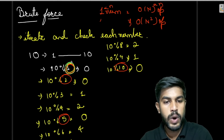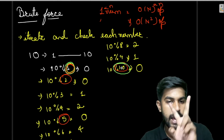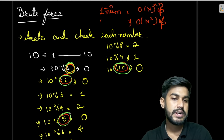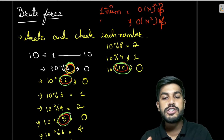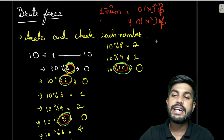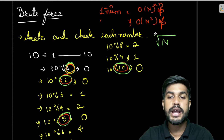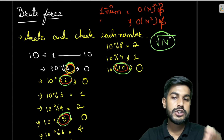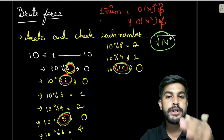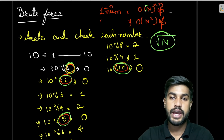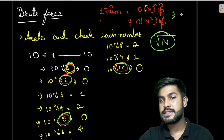We can optimize further by observing that 1 and 10 appear in pairs, 2 and 5 appear in pairs — divisors appear in pairs. So we only need to iterate till the square root of the value. That would be an improvement, reducing the time complexity to O(n√n).